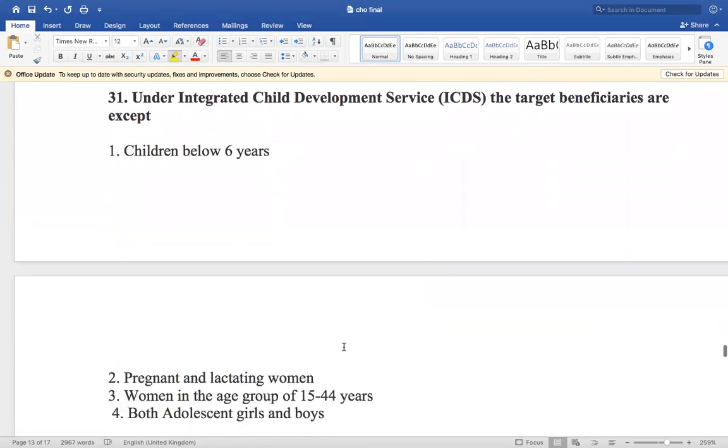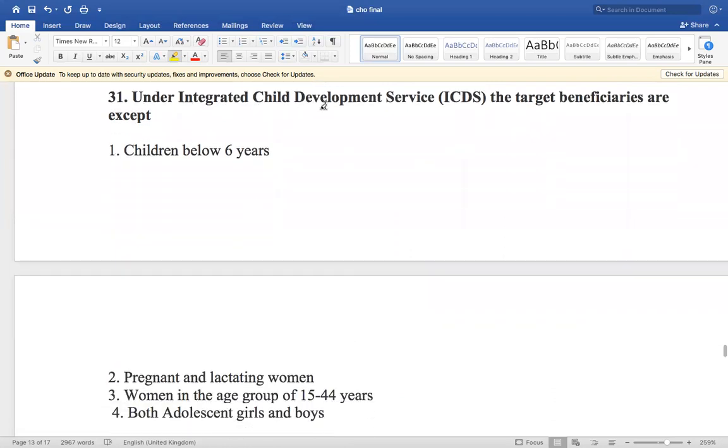Now the next question is: under Integrated Child Development Service, the target beneficiaries are except: child below 6 years, pregnant and lactating women, women in the age group of 15 to 44 years, and both adolescent girls and boys. So both adolescent girls and boys are not the part of ICDS. Only adolescent girls are the part.